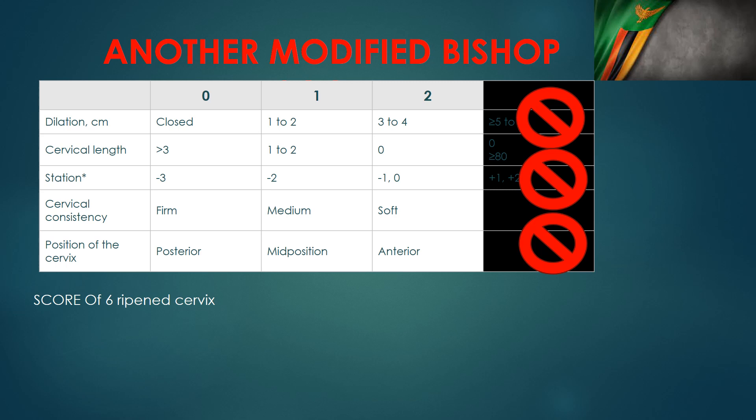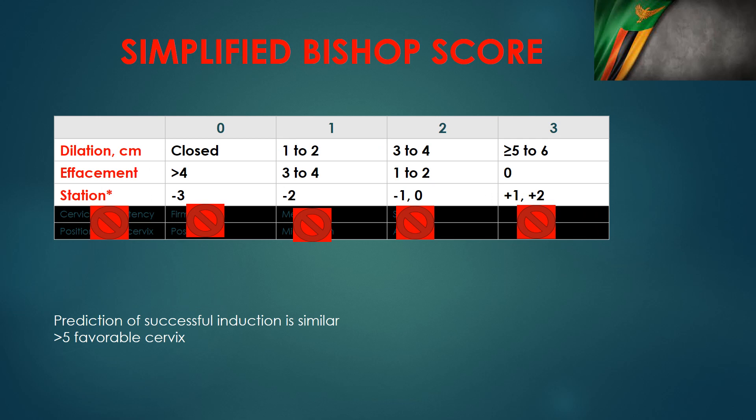Finally, there is a simplified Bishop Score that uses only three parameters — the most important ones when assessing the Bishop Score: dilatation, effacement, and station. Dilatation is the most important, followed by effacement, then station. Cervical consistency and position of the cervix are removed. The total score for this simplified version is nine, and a score of five or above is considered favorable, while less than five is unfavorable.